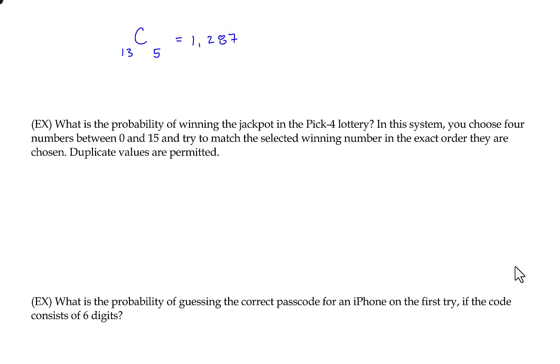What is the probability of winning the jackpot in the pick four lottery? In this system, you choose four numbers between zero and 15 and try to match the selected winning number in the exact order they are chosen. Duplicate values are permitted. So this is combining the ideas of probability and counting techniques, right? Because we need to count all the different ways that this can happen before we can do this probability. One thing that's helpful is this little clue that duplicate values are permitted. So like a winning number could be like 4407, for instance. So you could use the four twice. That actually helps us because it rules out the possibilities of combinations and permutations, because there you can't have duplicates.